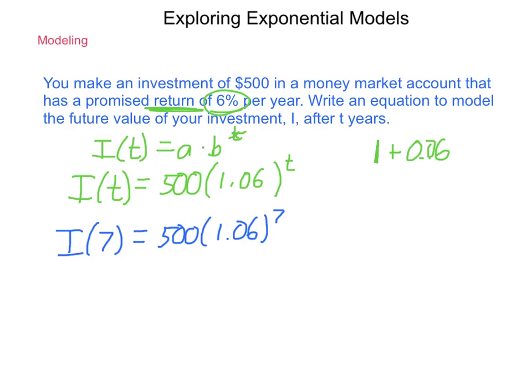So, 1.06 raised to the 7th power comes back as a very long decimal, but in general, 500 times 1.5036 is where I'm going to round off to. Multiplying this answer by our $500 initial investment gives us $751.82 at the end of 7 years.